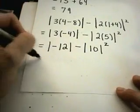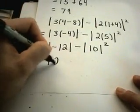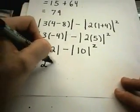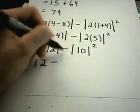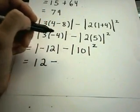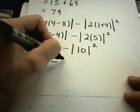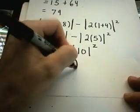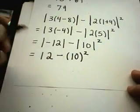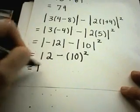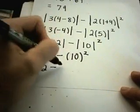2 times 5 is 10 squared. The absolute value of negative 12 is just plain old positive 12. The minus sign is not inside the absolute value, so we'll leave that alone. And the absolute value of 10 is just 10. I still have to square that, though.